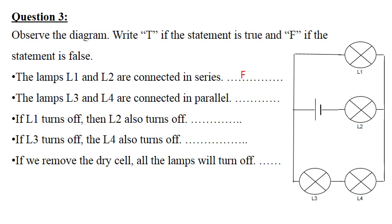Statement two — lamps L3 and L4 are connected in parallel. This is also false, since L3 and L4 are adjacent to each other, meaning they are in series. Statement three — if L1 turns off, then L2 also turns off. This is false, since in a parallel connection, if one lamp turns off, the others remain functioning.